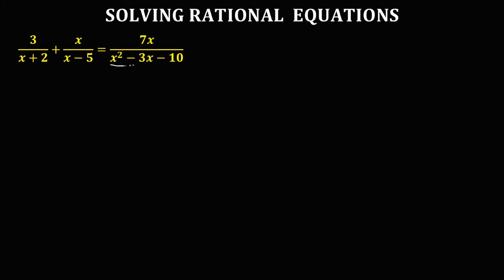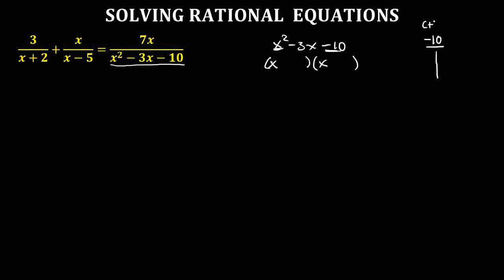Since we have this quadratic equation, that's x squared minus 3x minus 10. We can apply factoring for this equation using quadratic factoring. First, we need to write x to both sides of the factors — we have x times x. Then for this negative 10, we need to list all the factors. Since 10 is negative, one of the factors is positive and one is negative. Since the middle term is negative, the bigger number of the factors must be negative.